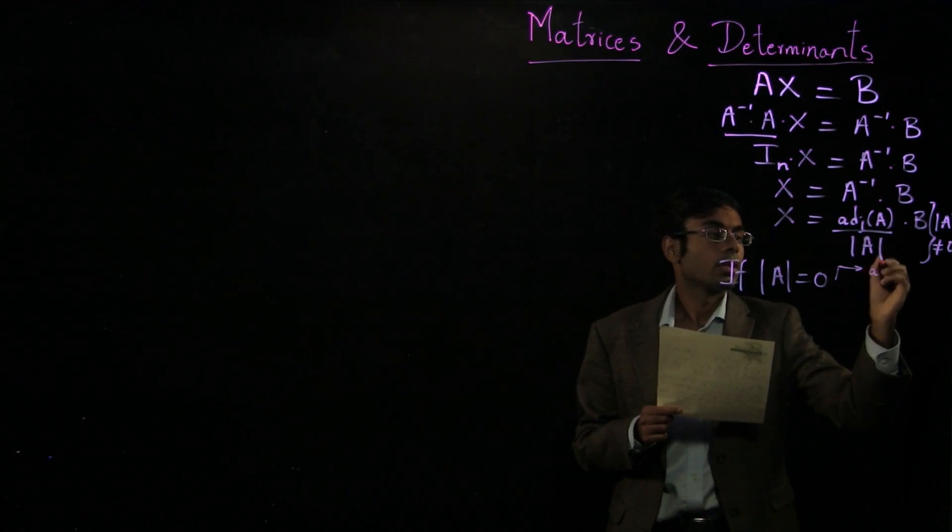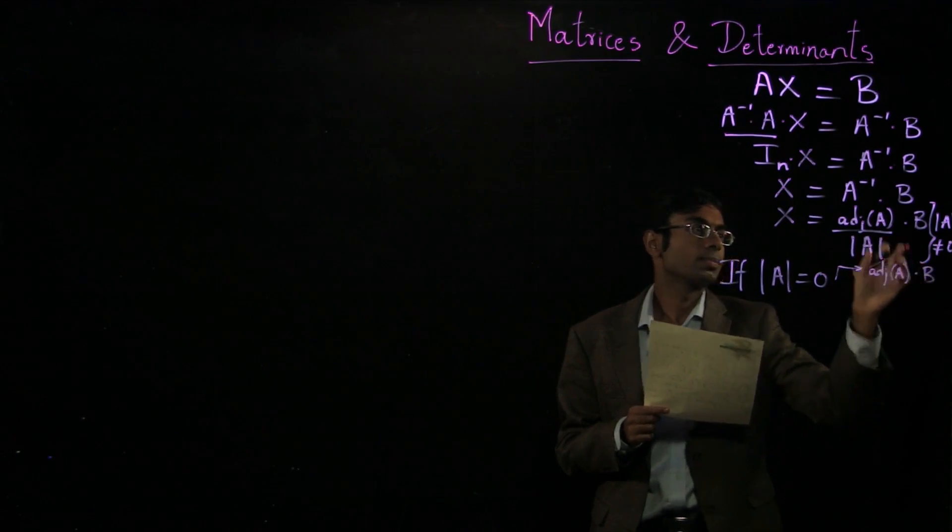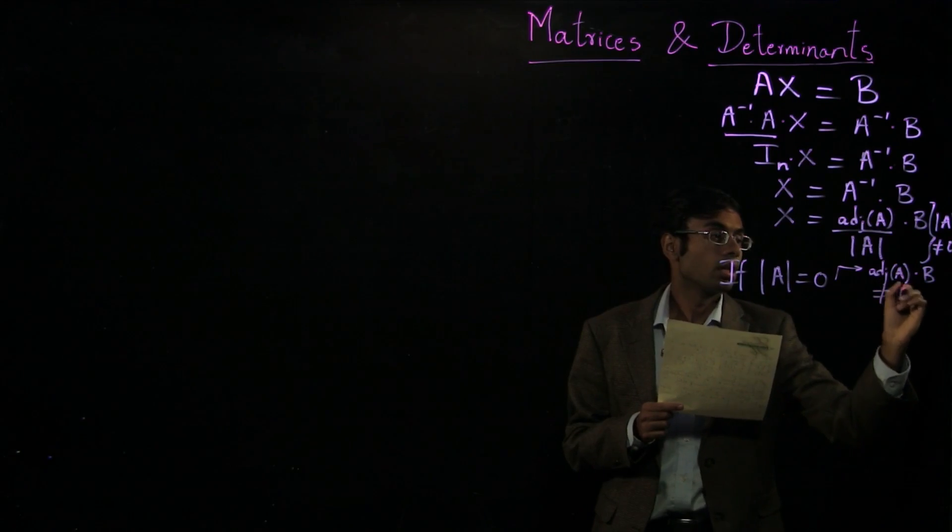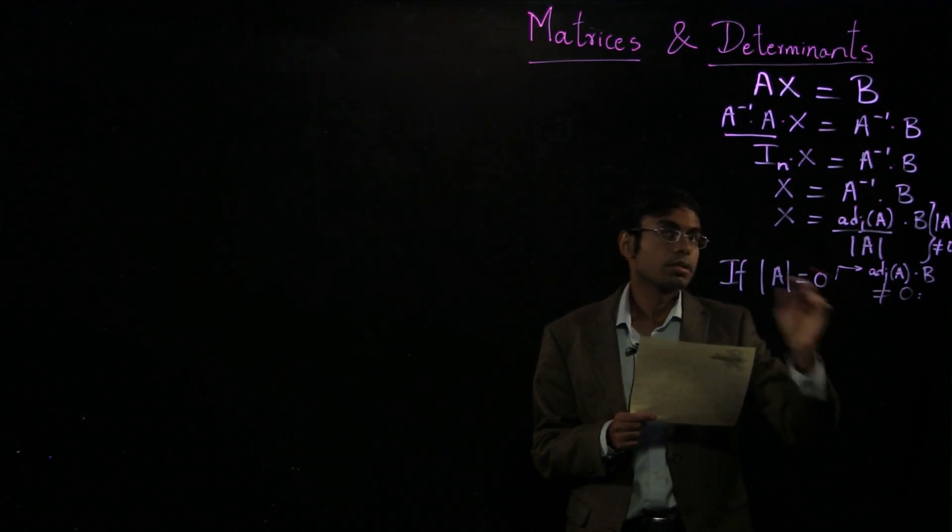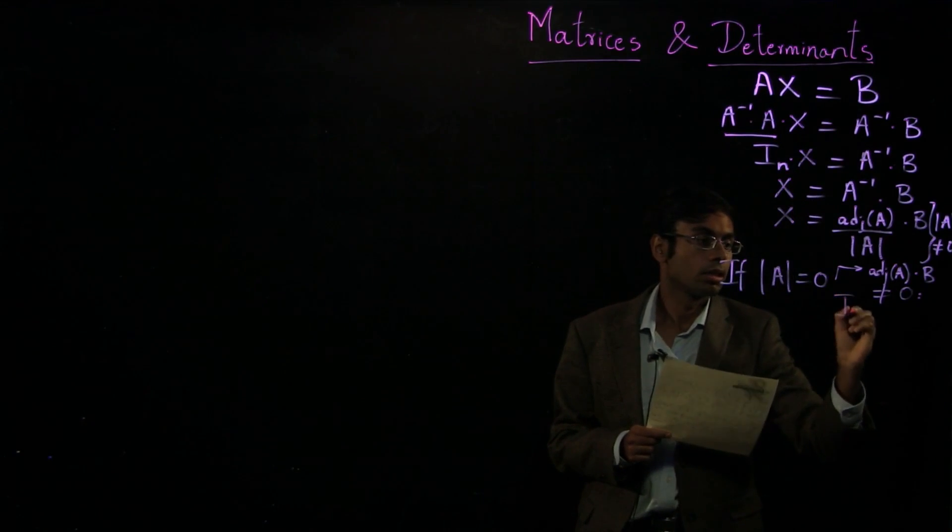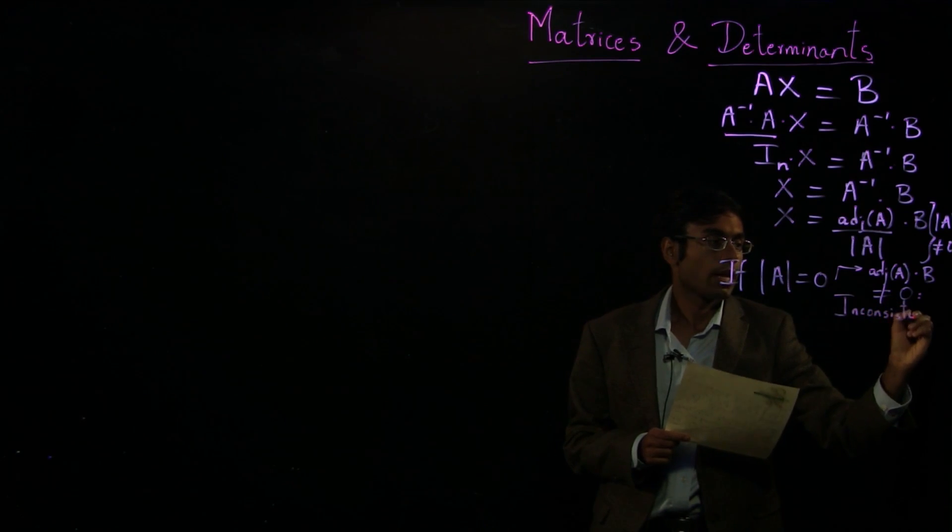Then if adjoint of A times b, if this product is not zero, the system of equations, this whole system of equations is inconsistent, and it has no solution.